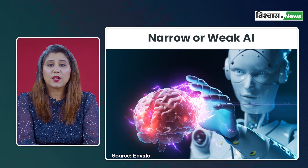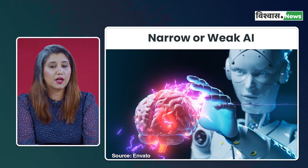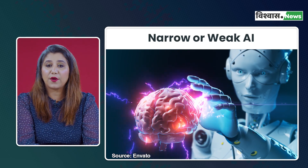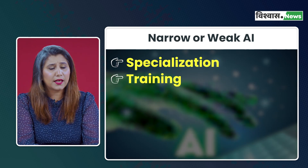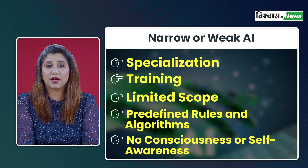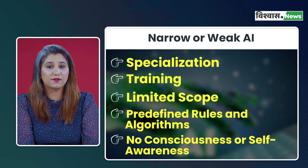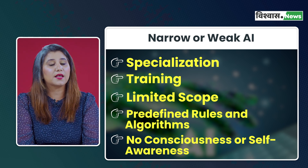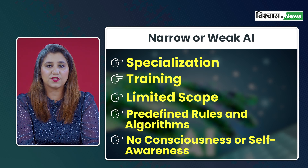Narrow AI, also known as weak AI or artificial narrow intelligence, refers to a type of artificial intelligence that is designed and trained for a specific task or a limited set of tasks. Unlike human intelligence, which is characterized by adaptability and a broad range of cognitive abilities, Narrow AI is highly specialized and excels in performing predefined functions within a narrow domain. It is like having a superhero with one amazing power, but that's all they can do.